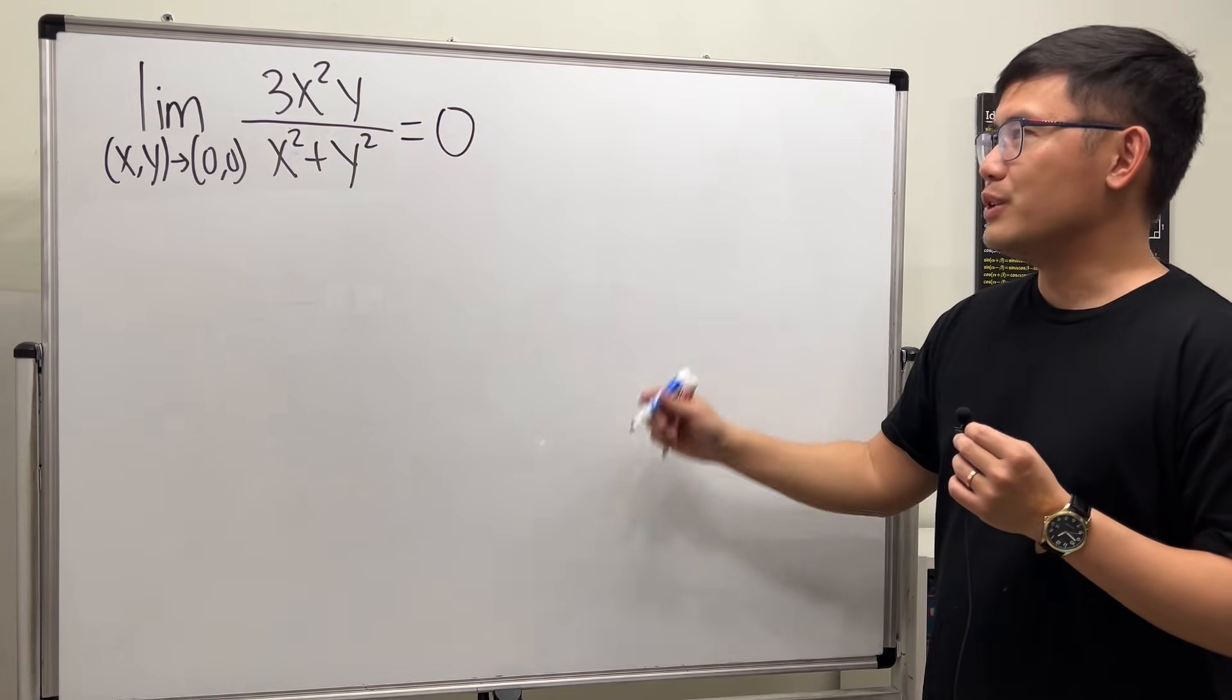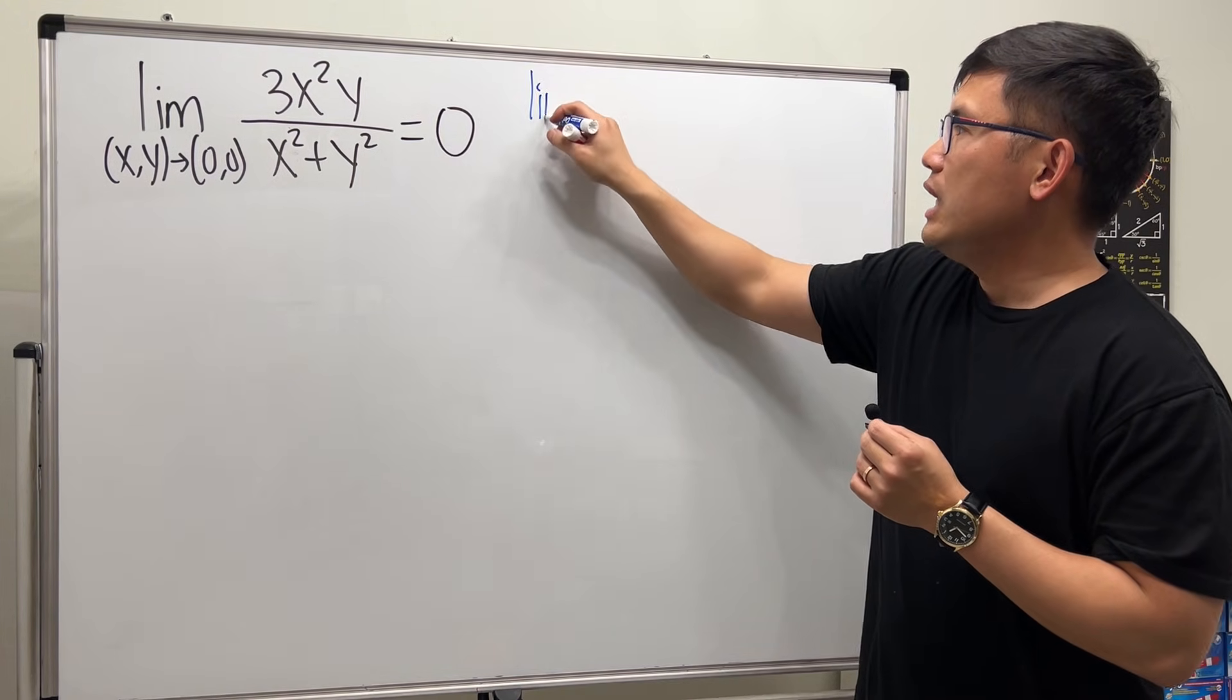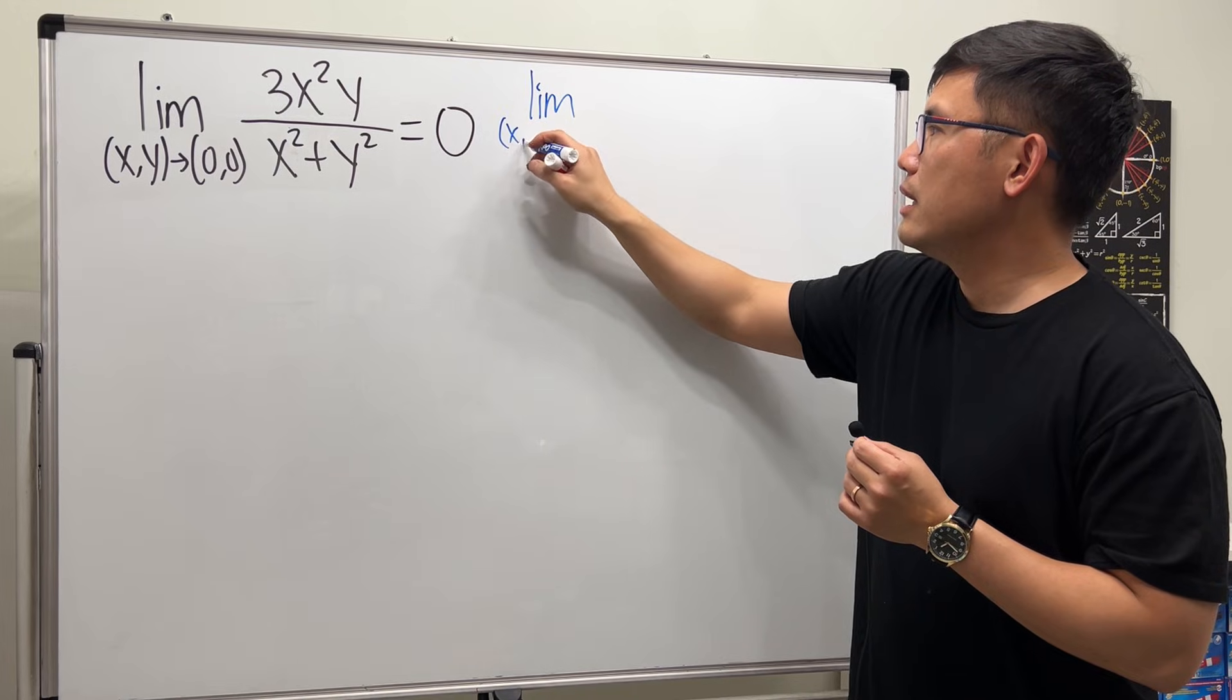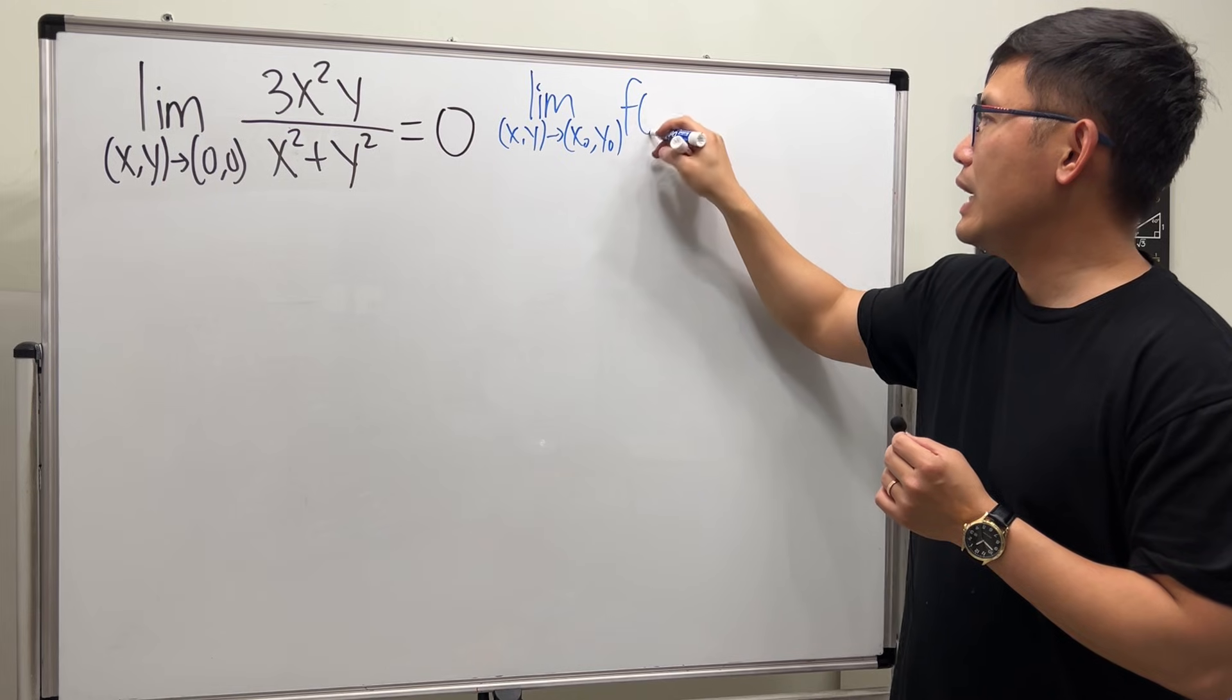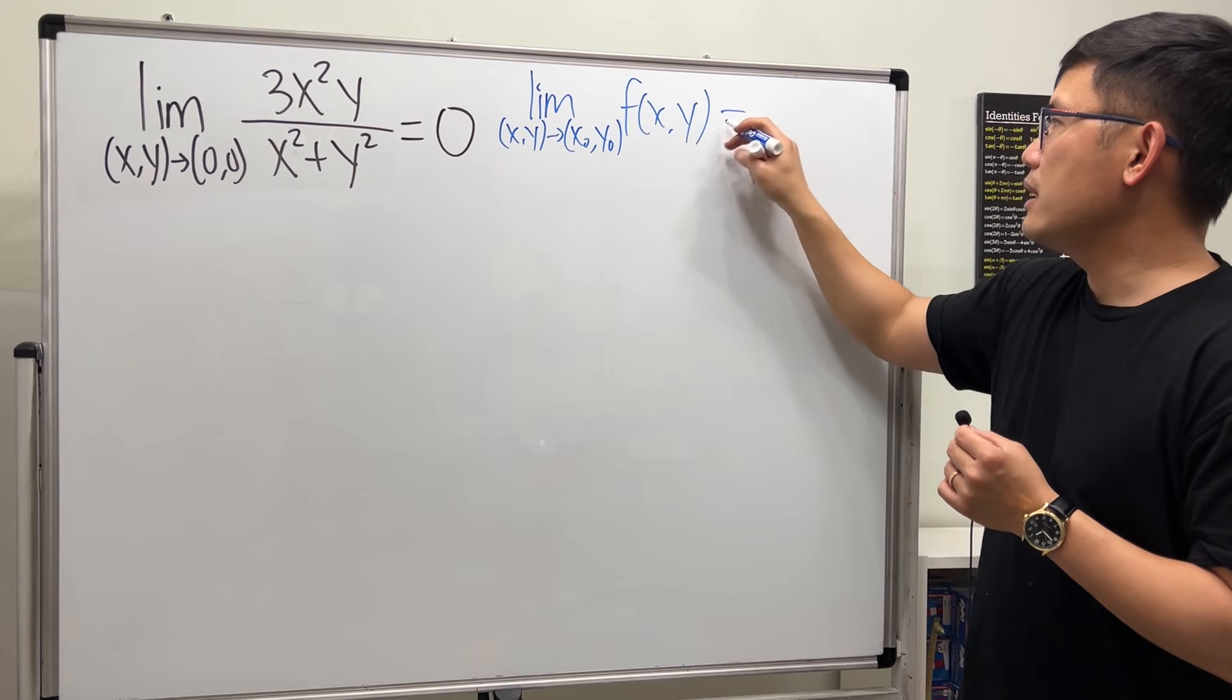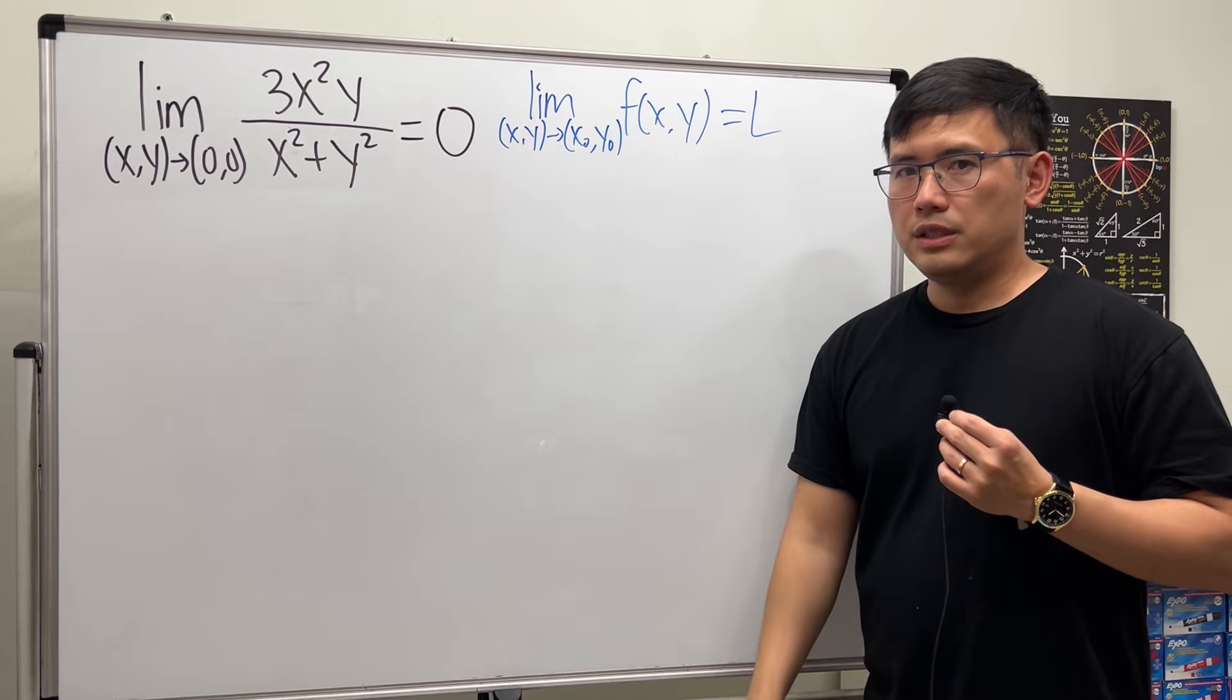Here, let me remind you guys the definition. If we have a limit as (x,y) approaching, let's say, the point (x0,y0), and let's say we have the function f(x,y), let's say this limit is equal to L.